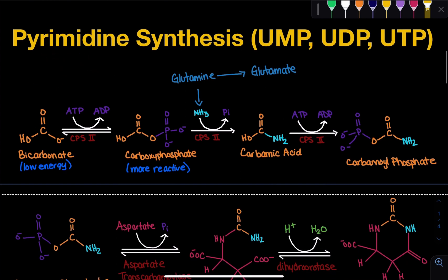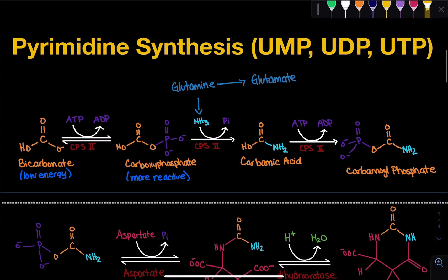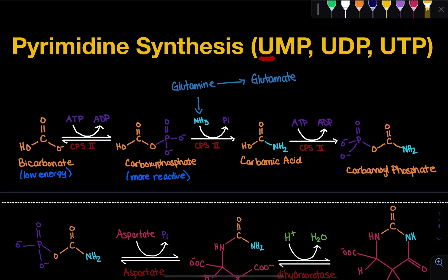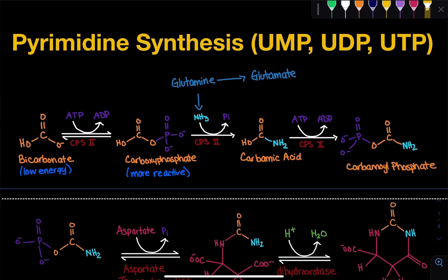First we're going to focus on the synthesis of UMP, UDP, and UTP. U stands for uracil, P stands for phosphate, and the letter in the middle tells us how many phosphates we have. So here we have uracil monophosphate, uracil diphosphate, uracil triphosphate. We're focusing on the pyrimidine uracil, and then later we'll see how we can utilize uracil monophosphate to create the cytosine monophosphates and the thymine monophosphates, the other pyrimidines.